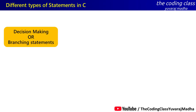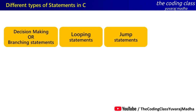Decision making is one type of statement. You will also use looping statements, jump statements, and selection statements. All these things will help us write code and make our program more flexible.